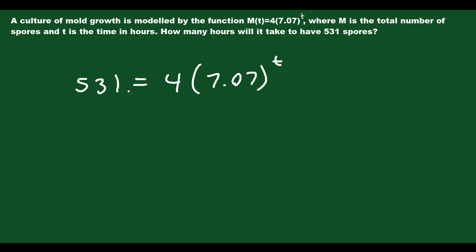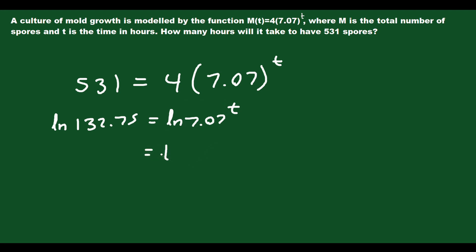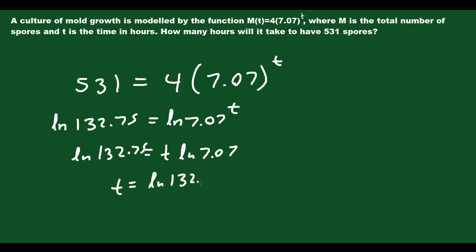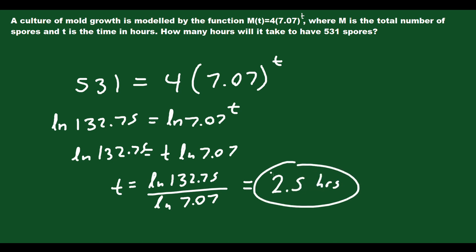We start with 4 and end up with 531. Divide both sides by 4: 132.75 equals 7.07 to the t. Take the natural log of both sides — same process. Bring down the t: t times ln(7.07) equals ln(132.75). Divide both sides by ln(7.07) to get t equals ln(132.75) divided by ln(7.07), which equals 2.5 hours. It doesn't take very long to go from 4 spores to 531 when we're talking about mold. And that's it.